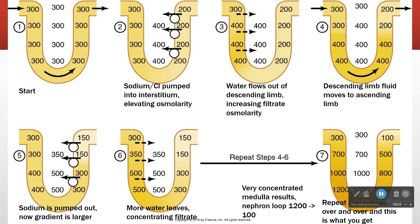Now if we look at the next phase, the water in here is going to be attracted to this high osmolarity region. The water is getting sucked out of the descending limb because of the solute from the ascending limb. So we've gone from 300 to 200 and 400.